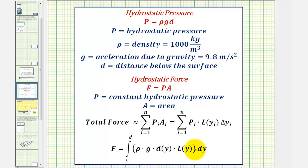And again, L(y) times Δy gives us the area. So in our previous integral, W, the weight density, was ρ times g.